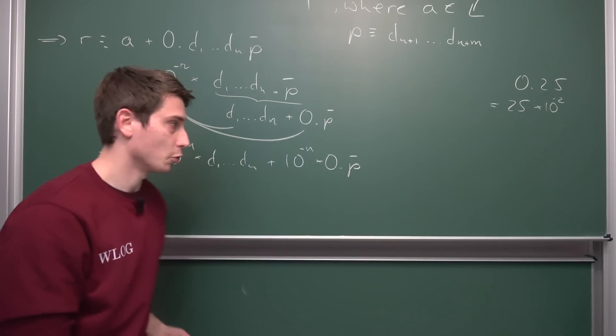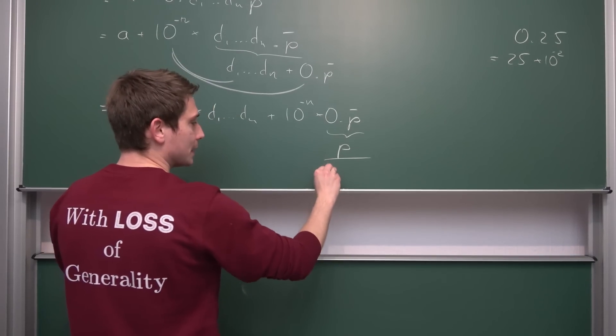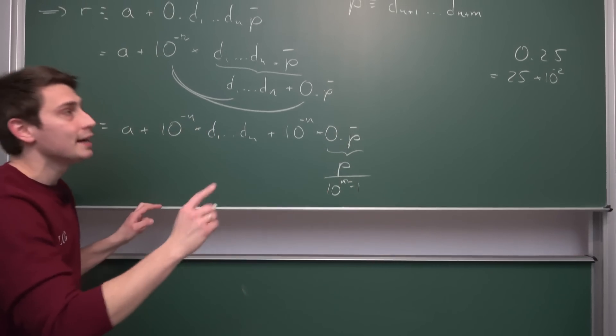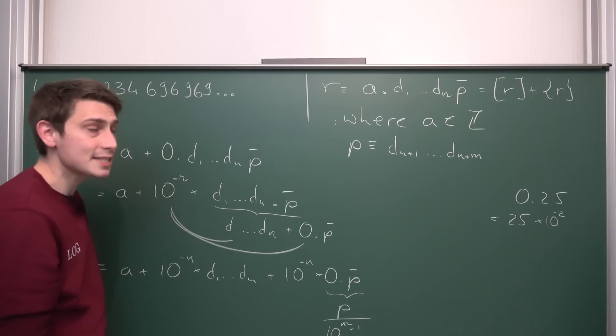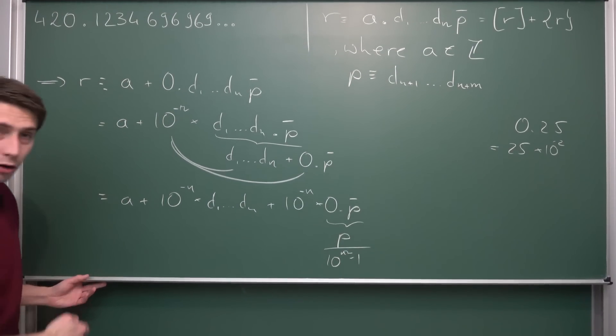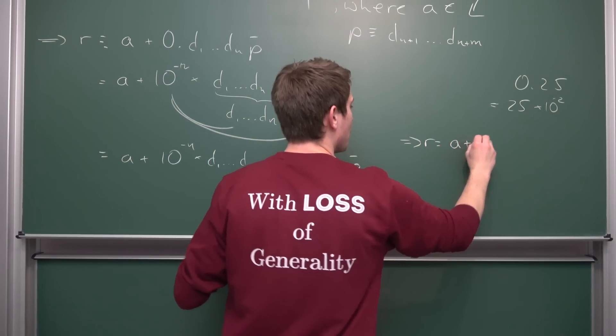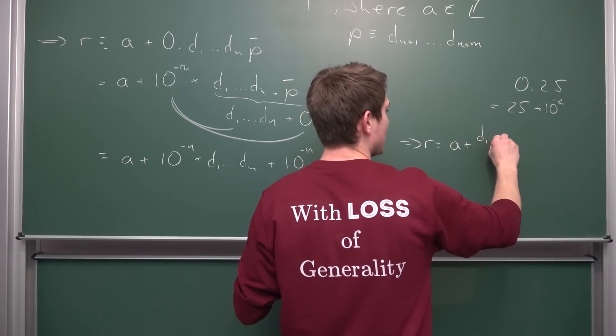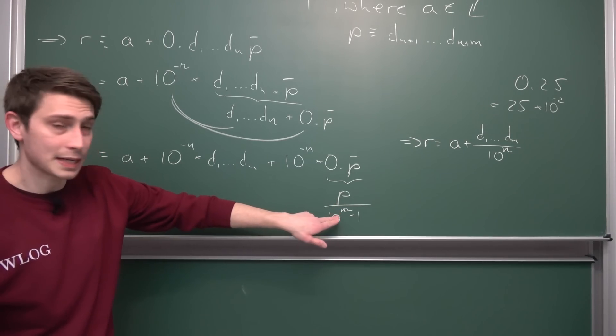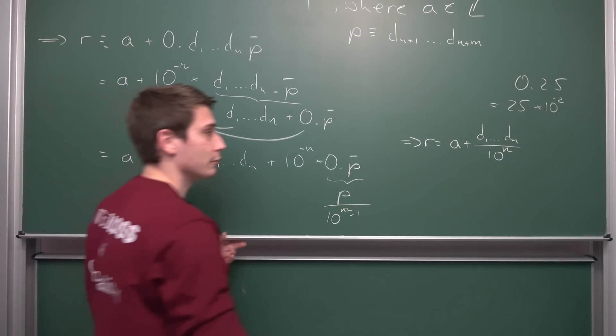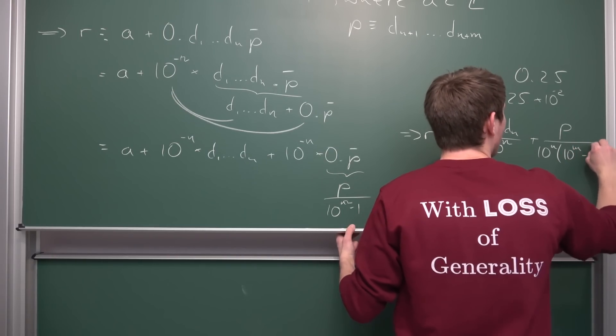And this is why I made the video before. It was kind of a corollary to what we have here now because 0 dot P periodic is nothing other than our P that we are having here divided by 10 to the mth power minus 1, because we are having m places here. It goes from 1 up until m, meaning it has m decimal places coming with it. So we need 10 to the mth power, meaning overall our R that we had at the beginning can be expressed as R, hence nothing other than our integer part at the front A plus D1 concatenated up until Dn divided by 10 to the nth power, and all of this is going to be added to P divided by 10 to the mth power minus 1, multiplied with 1 over 10 to the nth power. So plus P divided by 10 to the nth power times 10 to the mth power minus 1.